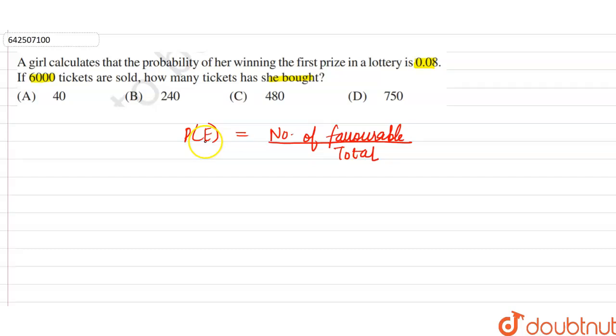Now, in this question, the probability of winning is given 0.08. Number of favorable outcomes means the number of tickets that the girl has bought.